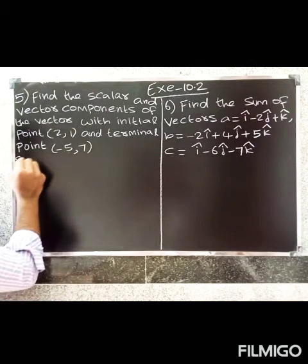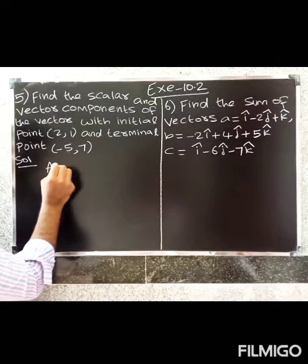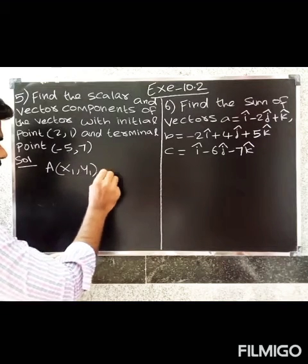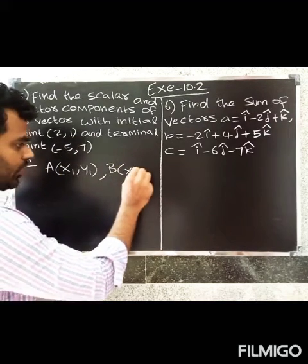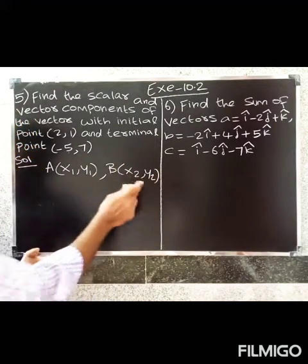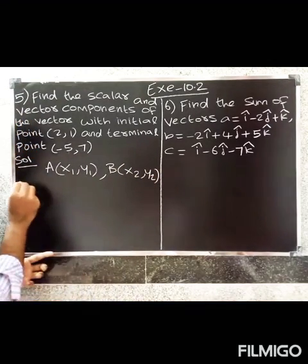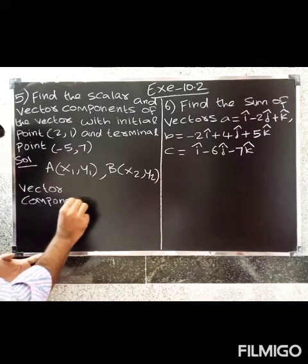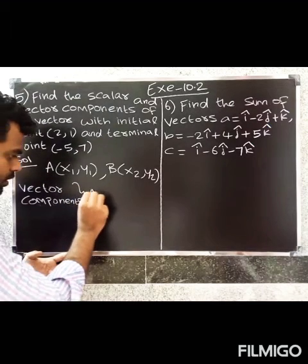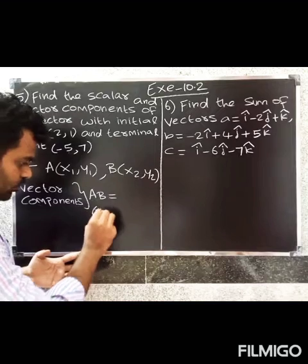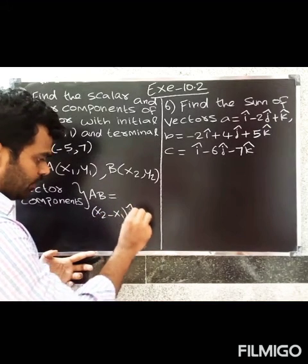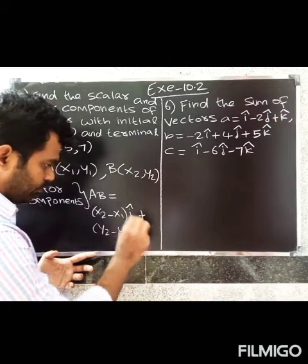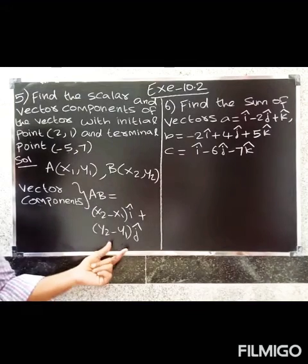So, vector components — how do we use the initial point? We use the a value (2,1), so x1, y1. Next, we use the b value: x2, y2. This is the initial point and this is the terminal point. So, vector component formula: